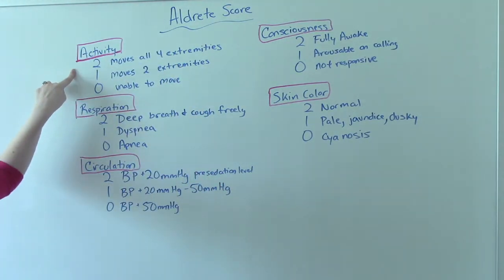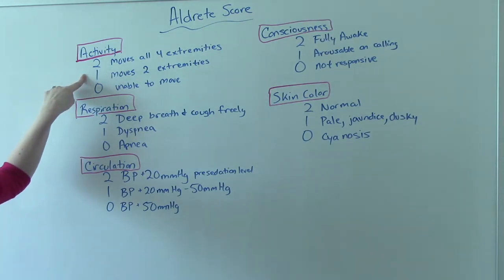As far as activity, you should be able to move all four extremities. So both arms, both legs. And if you can do that, you get a 2. If you could only move 2, usually your upper body, you get a 1. And then if you can't move anything, you get a 0.